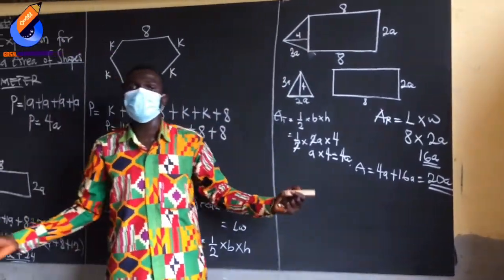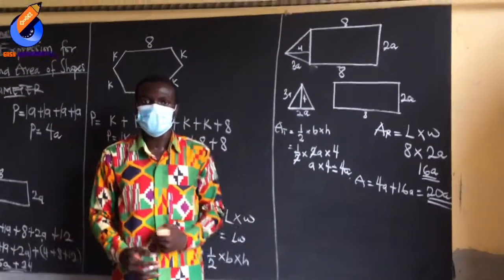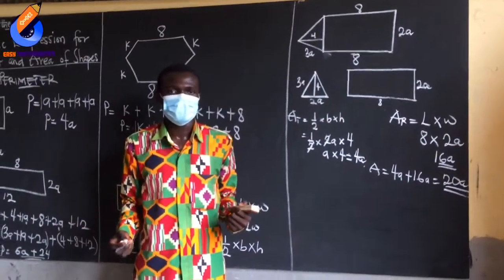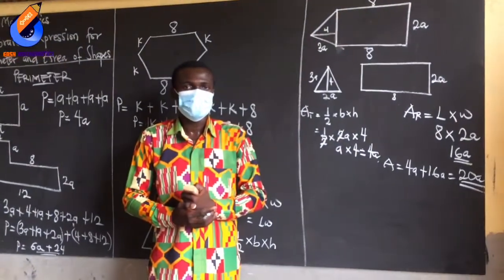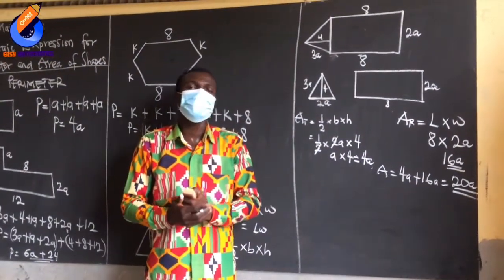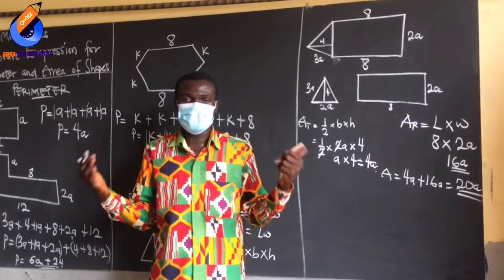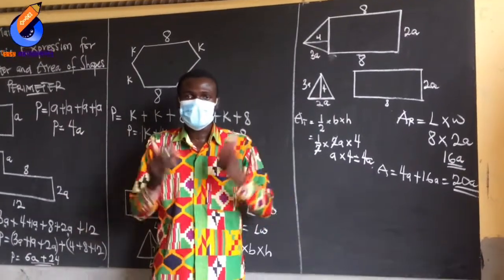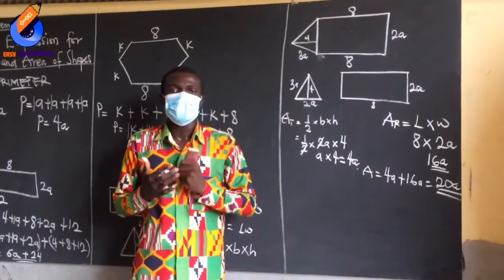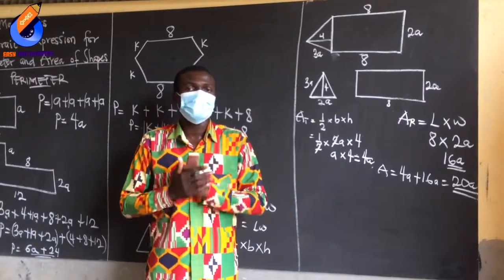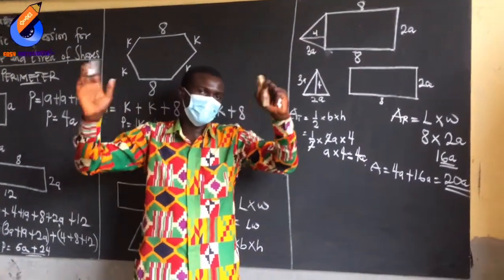This is how we find the area for algebraic expressions. See you, God willing, next week, same time. Next week we will be bringing strands of Basic 7. This brings us to the end of finishing under Basic 6 strands. Bye bye.